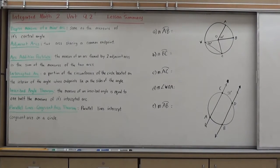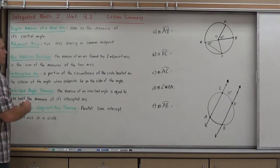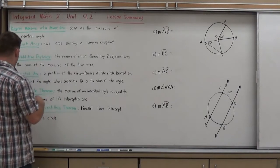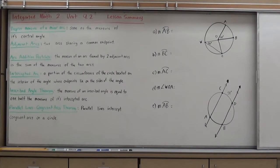So arc AB plus arc BC should equal that full arc AC. It's kind of another one of our common sense ones, hence the reason it's a postulate and it's accepted without any sort of proof. Now some special arcs. We have something called an intercepted arc. This is an important one to know. An intercepted arc is a portion of the circumference of the circle located on the interior of an angle whose endpoints lie on the side of the angle.